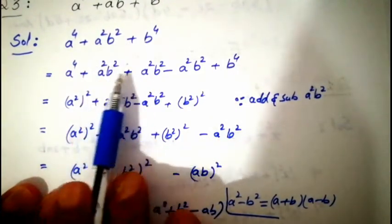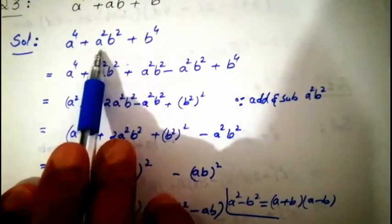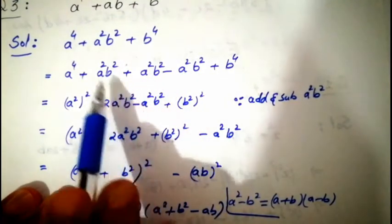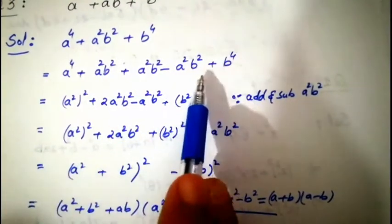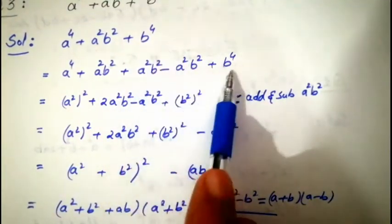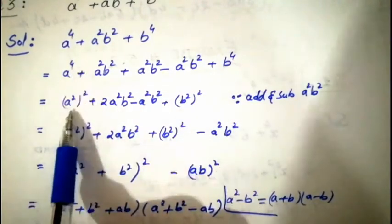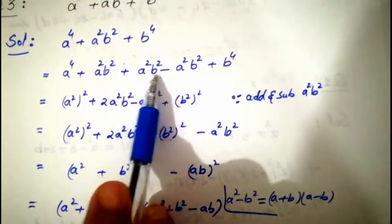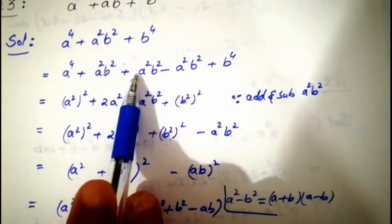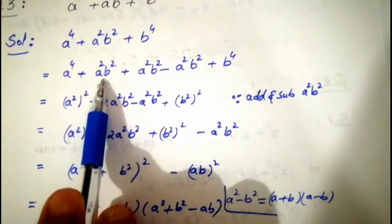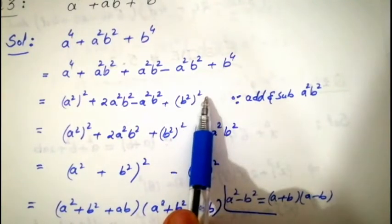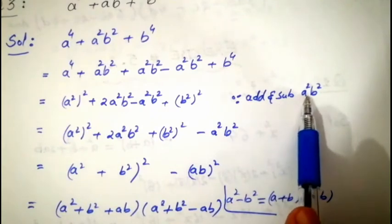The middle term a²b² is given. The coefficient is 1, but we need coefficient 2 for the formula (2ab). So we split a²b² into two equal parts: a²b² + a²b² = 2a²b². We add a²b² and subtract a²b². So: (a²)² + 2a²b² + (b²)² − a²b².